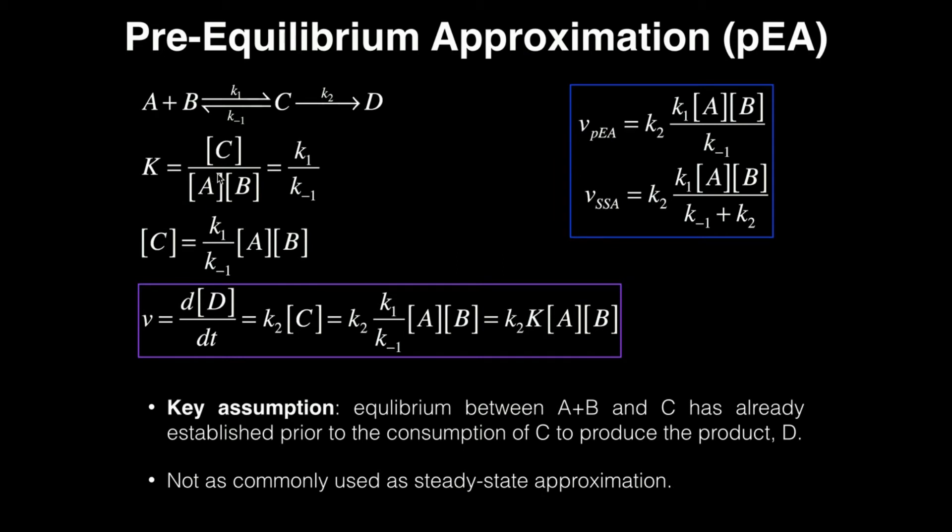So we want to solve for the concentration of C using this information. Well, all I would have to do is multiply both sides by the concentrations of A and B. And what I get is the concentration of C is K1 divided by K-1 times the concentration of A times the concentration of B.